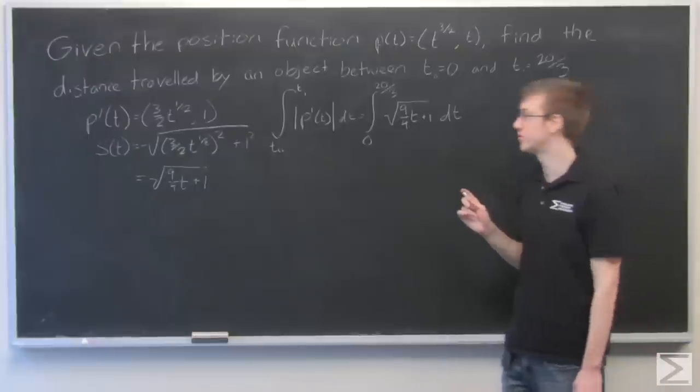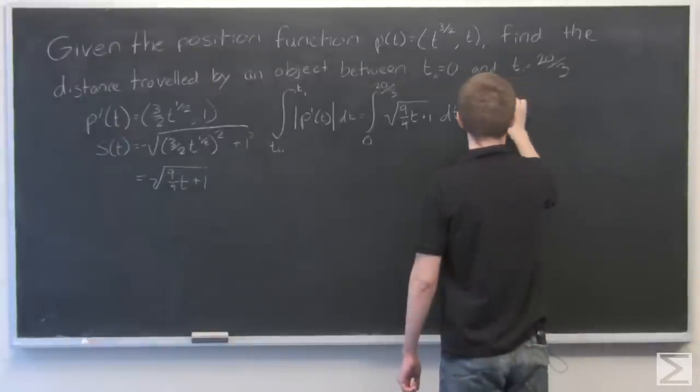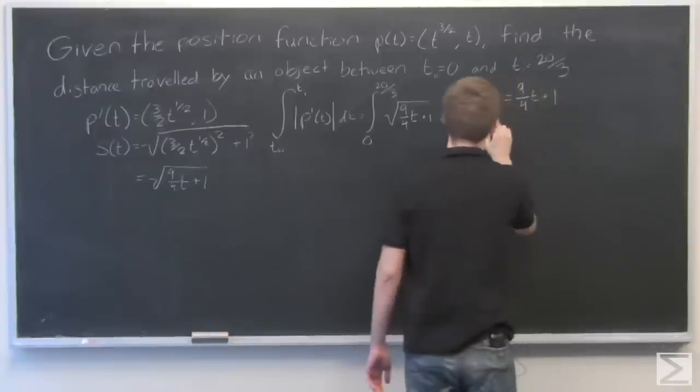For this integral we're going to do a u substitution where u equals 9 fourths t plus 1, and du equals 9 fourths dt.